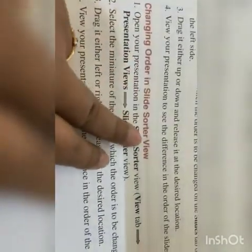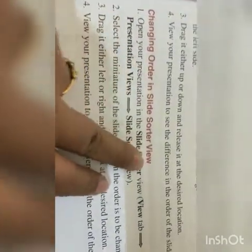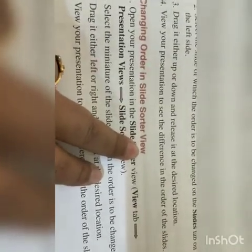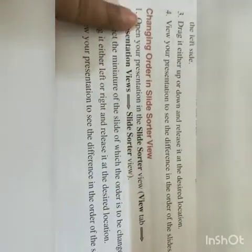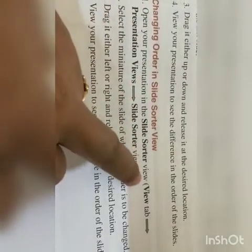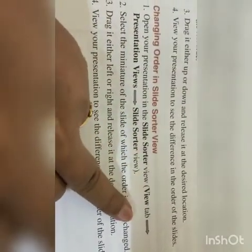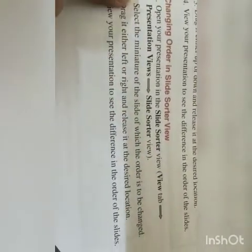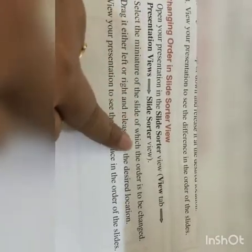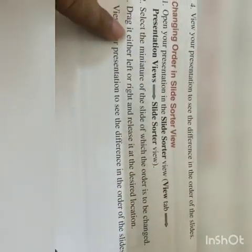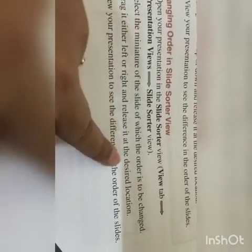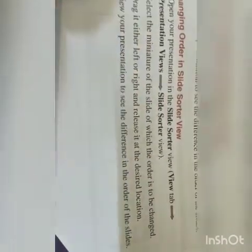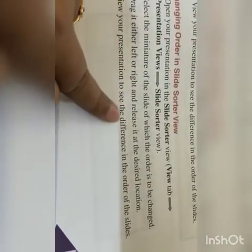Changing order in Slide Sorter View: Number one: open your presentation in Slide Sorter View — available in the View tab under Presentation Views. Number two: select the miniature of the slide whose order is to be changed. Number three: drag it either left or right and release it at the desired location. Number four: view your presentation to see the difference in the order of the slides.